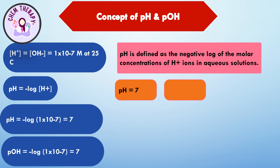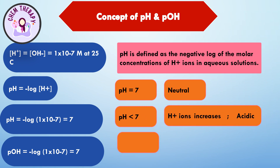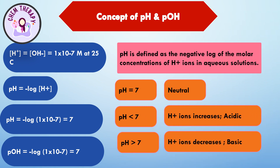The pH values can be conveniently used to analyze the nature of a solution. If the pH value is 7, the solution is neutral. If the pH is less than 7, the solution is acidic. And if the pH is greater than 7, the solution is basic.